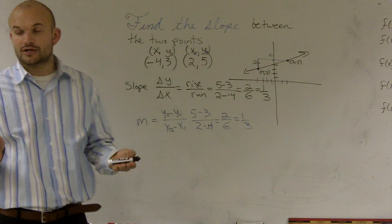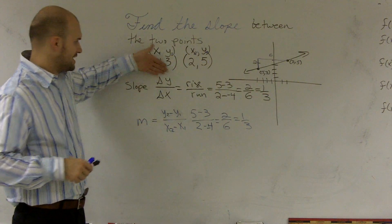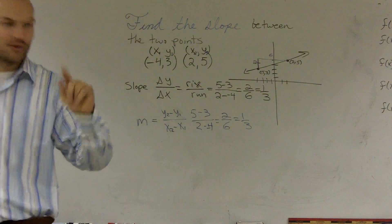So remember when you're finding the change of something, you're going to be using subtraction. And just remember slope is the ratio of the change in y values over the change in your x values. And that's how you find the slope between two points.